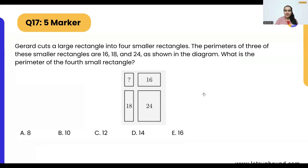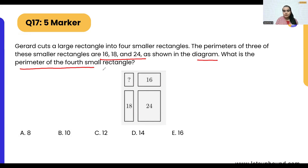Girard cuts a large rectangle into four smaller rectangles. The perimeters of these smaller rectangles are 16, 18, and 24, as shown in the diagram. What is the perimeter of the fourth small rectangle? That's what we need to find out.